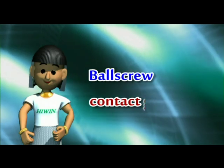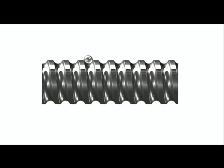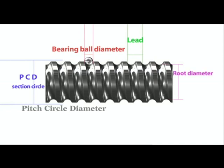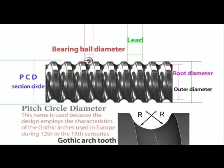Now we will introduce the contact geometry of ball screws. Pitch circle diameter is the diameter of the circle formed by the central diameter of ball screws' upper and lower ball bearings. The lead is the distance traveled by the nut when the screw turns one rotation. The bearing ball diameter. The root diameter is the smallest diameter of the threads. The outer diameter, also known as the nominal outer diameter, is the largest diameter of the threads. A gothic arched tooth design has two identical radii and an offset center.